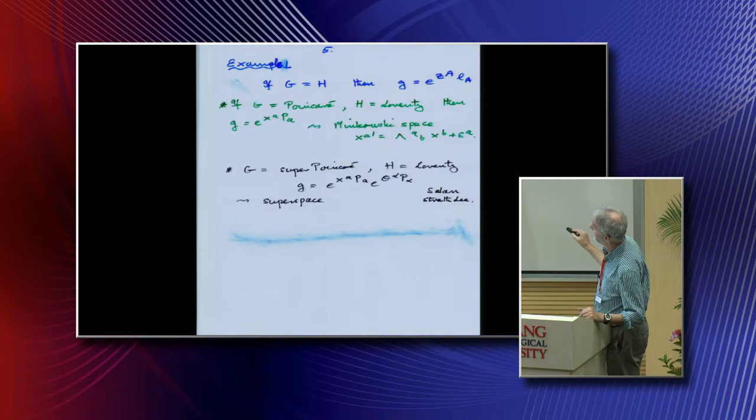Let me do an example. If we take G semi-direct product L as Poincaré, this is G is Lorentz, and H is the Lorentz group, so you gauge away all the fields. Then you just have e^(X^A P_A), and then you calculate the transformations, those rigid ones, and this is just Minkowski space.